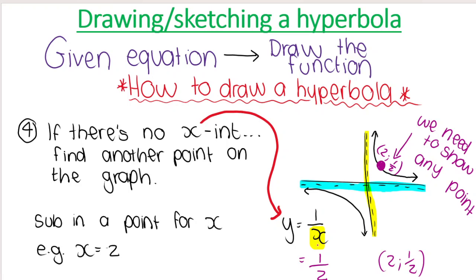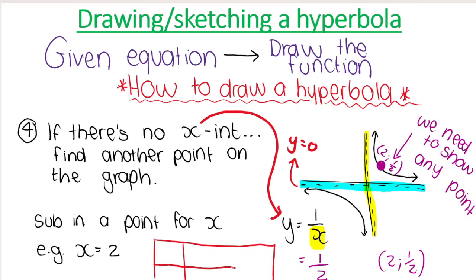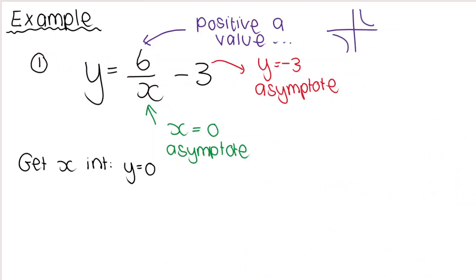For example, y equals one over x has no x-intercept — you can see the horizontal asymptote is where y equals zero. When I plot the function, I can't just have two curves with no reference point; I need another point. So I sub in x equals two, which gives y equals one half, giving me another point. Alternatively, you can draw up a quick table with x values like negative two, negative one, zero, one, two, to get coordinates to plot.